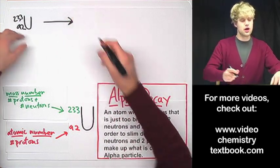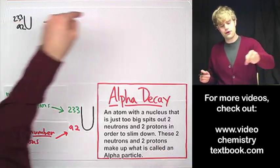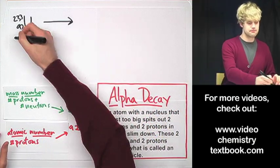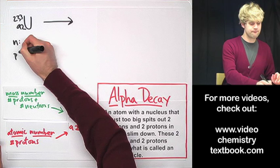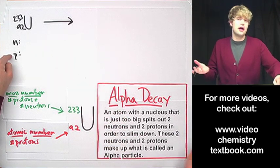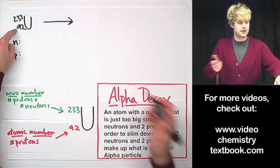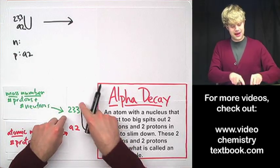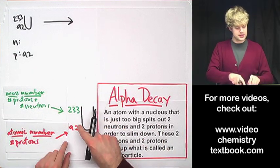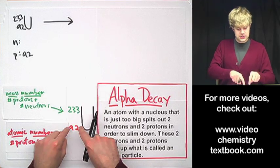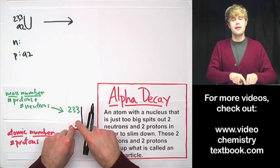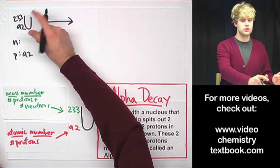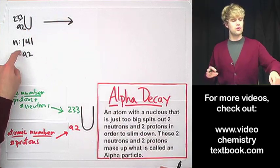Uranium is going to undergo alpha decay. In order to find out what's going to happen, let's keep track of the protons and neutrons as they change over the course of this decay process. Protons — it's easy to find out how many are in there because I just use this atomic number: 92 protons. What about the number of neutrons? Well, the mass number here isn't the number of neutrons, but it's the number of neutrons and protons. Since I know the number of protons, I can subtract to get the neutrons. So 233 minus 92 gives me 141 neutrons.